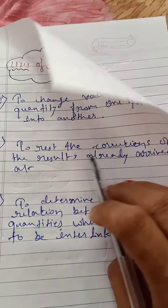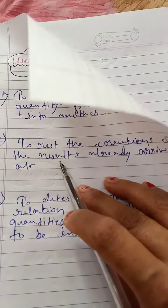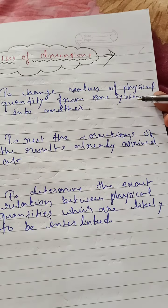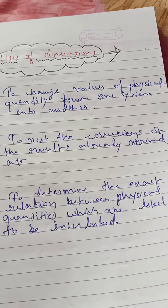The second use is to test the corrections of the result already arrived at. This means any formula in physics, you can check its correctness dimensionally.